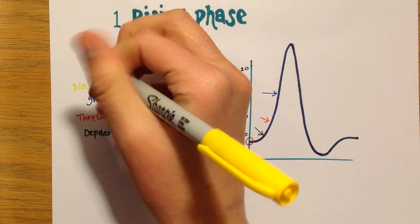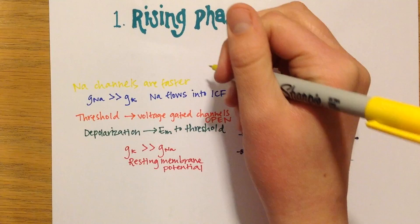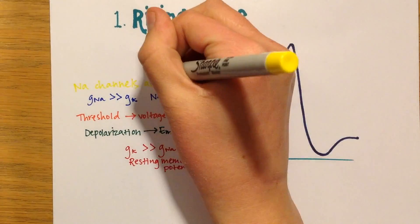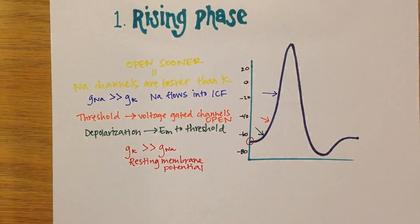The interesting voltage changes in the cell occur because although both of the voltage channels open at threshold, sodium channels have faster kinetics than potassium channels, so they open sooner.